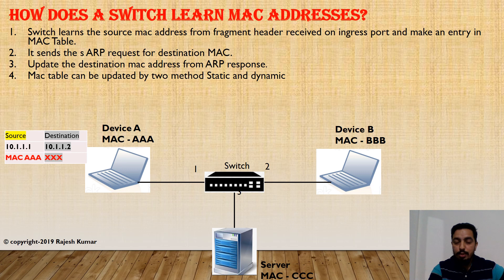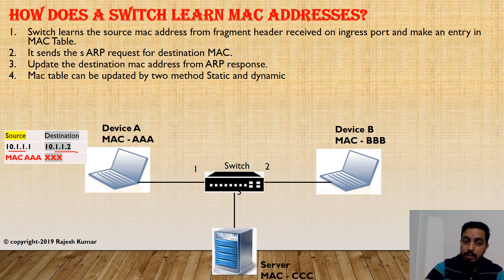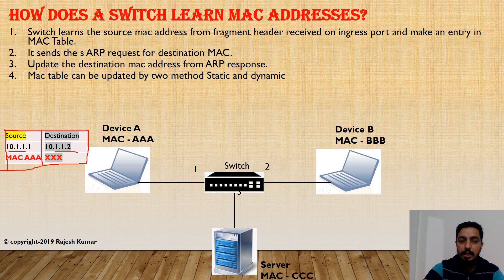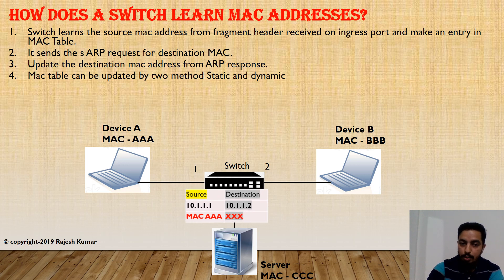Device A has some data it would like to send to device B. Since both source and destination IP addresses are from the same subnet, device A will not add any gateway information to the frame — it will send directly to the switch. However, device A does not know the MAC address of device B. So device A adds its own IP, its own MAC, the destination IP, and fills the destination MAC field with zeros, and sends this information to the switch.